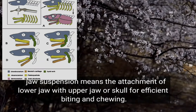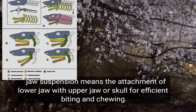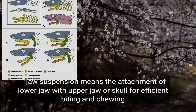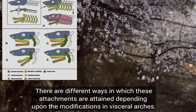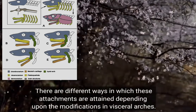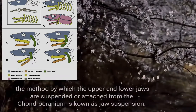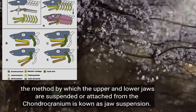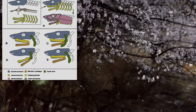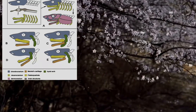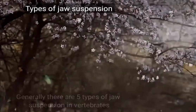Jaw suspension means the attachment of the lower jaw with the upper jaw or skull for efficient biting and chewing. There are different ways in which this attachment is attained depending upon the modification in the visceral arches. Jaw suspension can also be defined as a method by which upper and lower jaws are suspended or attached from the chondrocranium.